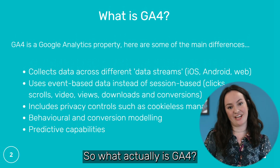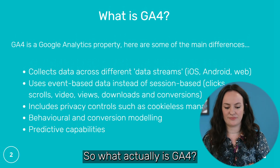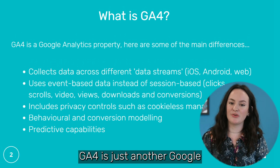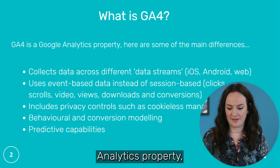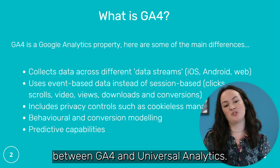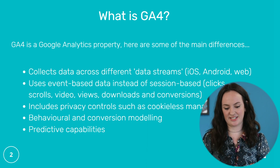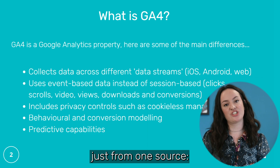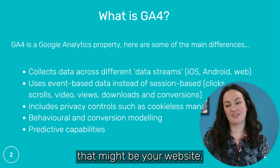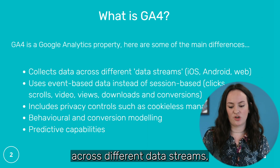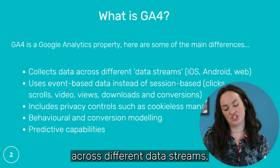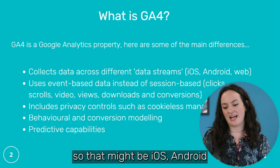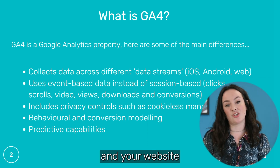So what actually is GA4? GA4 is just another Google Analytics property, but there are some big differences between GA4 and Universal Analytics. Universal Analytics used to collect data just from one source — that might be your website. GA4 can collect data across different data streams, so that might be iOS, Android, and your website.